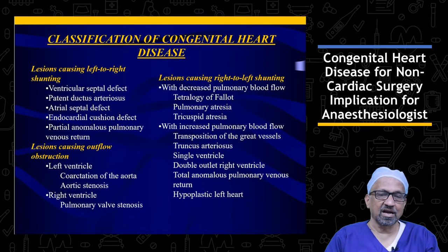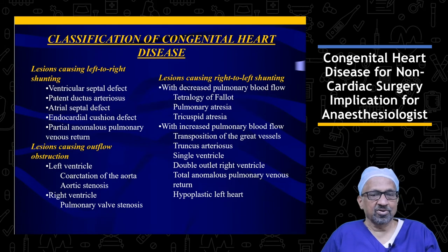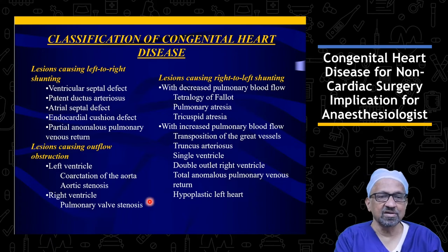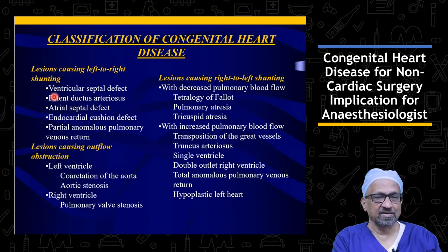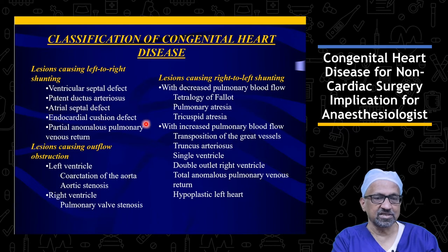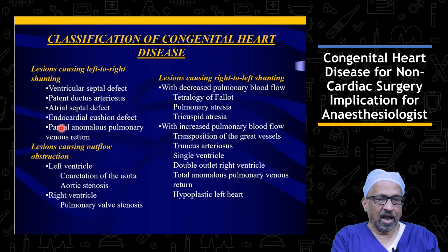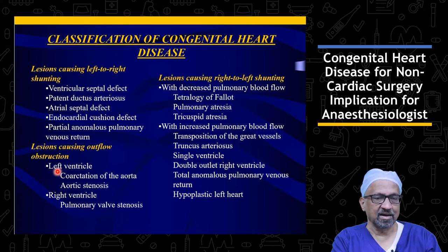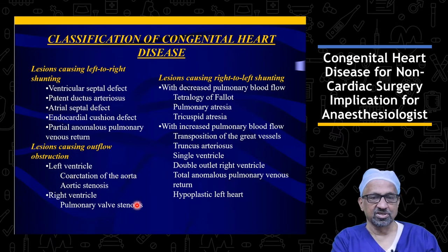Traditionally, congenital heart disease is divided into cyanotic and acyanotic heart disease. In the acyanotic group we have lesions causing left-to-right shunt — for example, ventricular septal defect, patent ductus arteriosus, atrial septal defect, endocardial cushion defects, and partial anomalous pulmonary venous return. In the same group we have lesions causing outflow obstruction, like coarctation of aorta, aortic stenosis, or pulmonary valve stenosis.